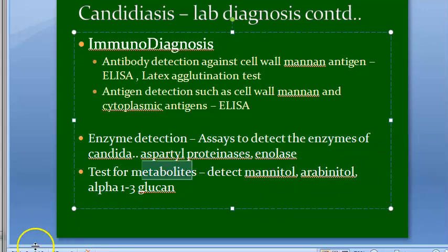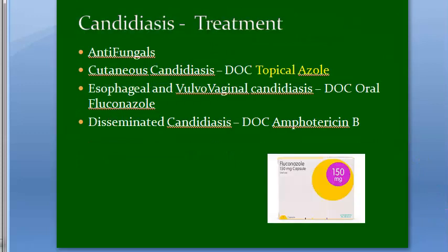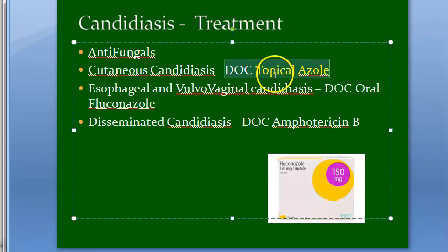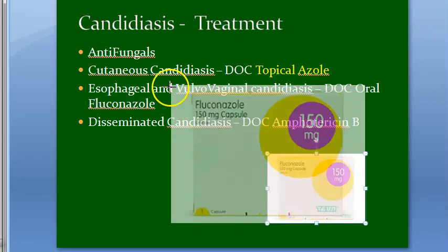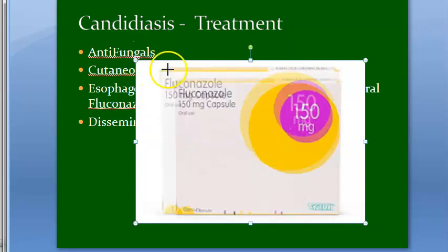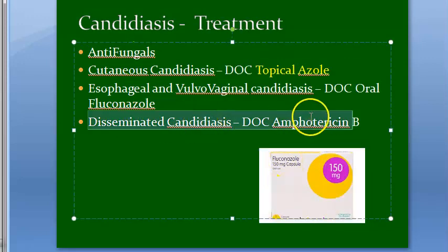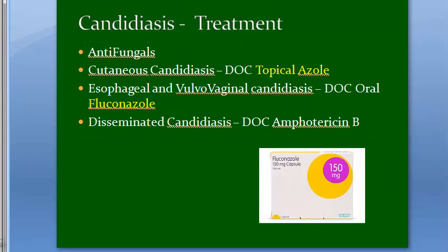You can also detect metabolites that Candida produces, like mannitol. For treatment: topical azoles are used for cutaneous candidiasis, fluconazole for vulvovaginal candidiasis, and for disseminated candidiasis you can use amphotericin B or fluconazole.